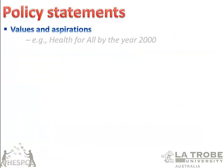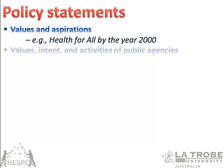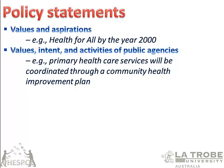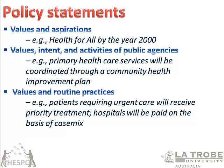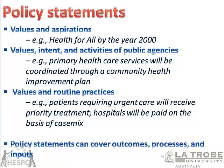Policy statements typically talk about values and aspirations — for instance, 'health for all by the year 2000.' This was a very strong policy of the World Health Organization toward the end of the 20th century. It also reflects the intent and activities of public agencies — for instance, a policy says that primary health care services in Australia will be coordinated through a community health improvement plan. Policy also reflects values and routine practices. Policy statements generally can cover outcomes, processes, and inputs — what we want to achieve, the way we want to achieve it, and what we need to put into the process.